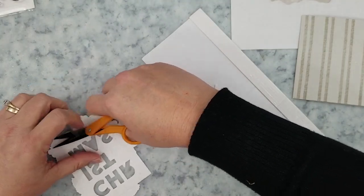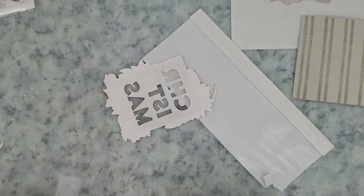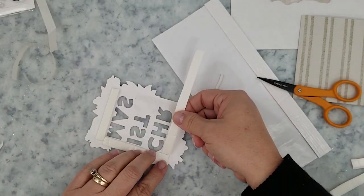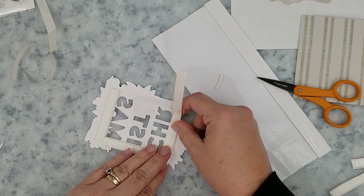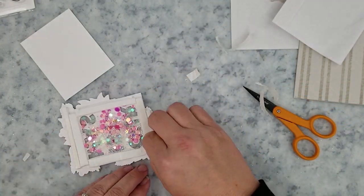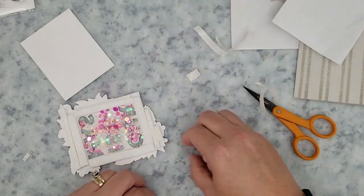So for our shaker card we're going to use Hero Arts 3 inch by 4 and 3 quarter inch acetate sheet and we're going to trim it down to fit the back of this panel. Then we're going to add some 3D mounting foam to the back of that over the acetate, making sure we leave no gaps there.